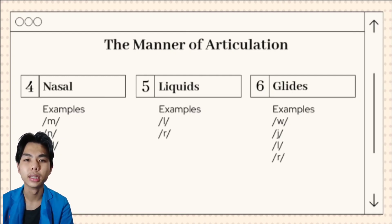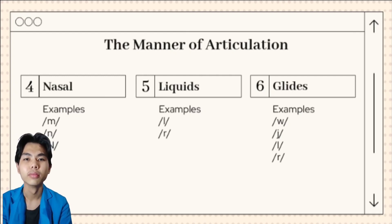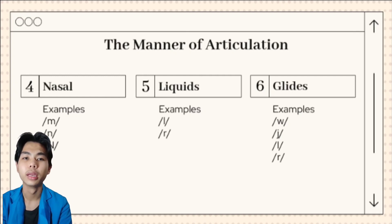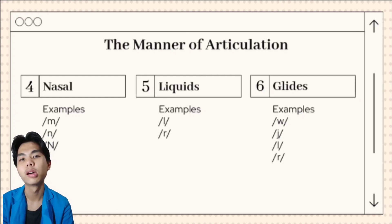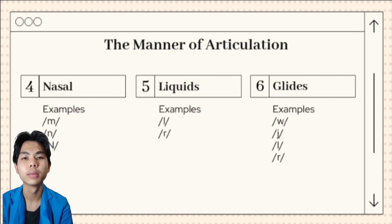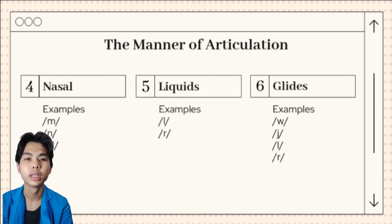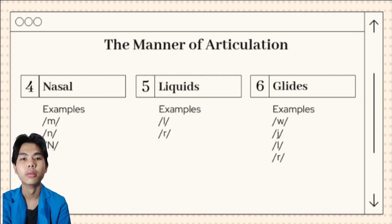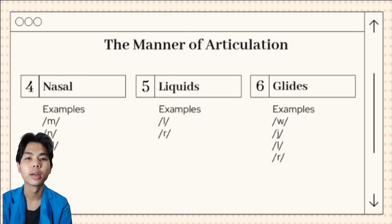And next, glides. The sounds W and J are described as glides. They are both voiced and occur at the beginning of words like 'wet' and 'yes.' The sounds are typically produced with the tongue in motion or gliding. They are formed from the position of a vowel and are sometimes called semivowels. In summary, the liquids L, R, and English W and J are combined in one category called approximants.